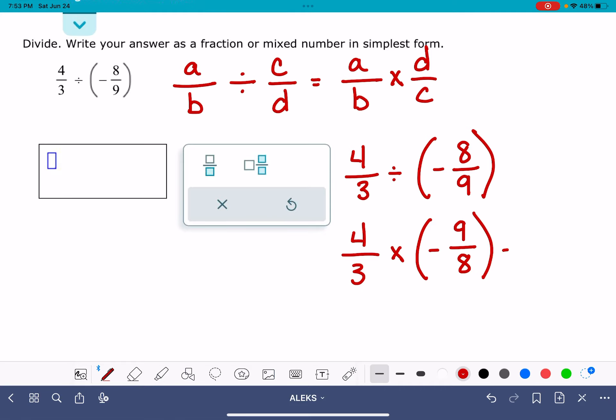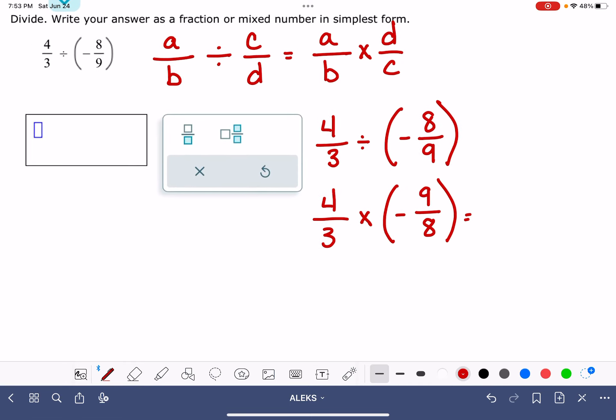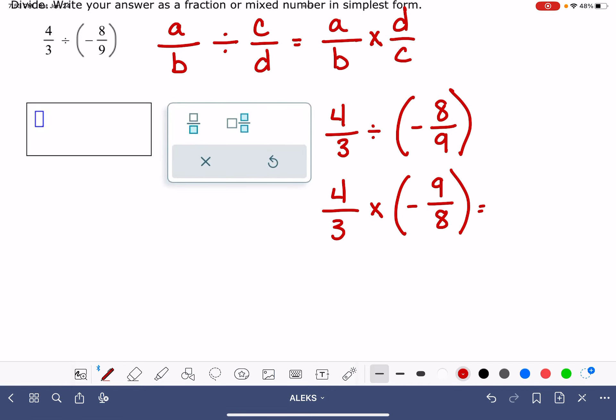And now I am ready to carry out the multiplication. I have 4 times 9, don't forget about that negative sign. 4 times 9 is 36, and 3 times 8 is 24.